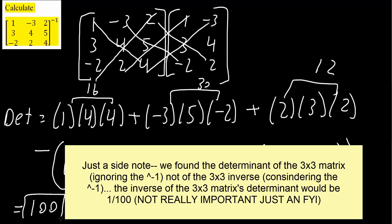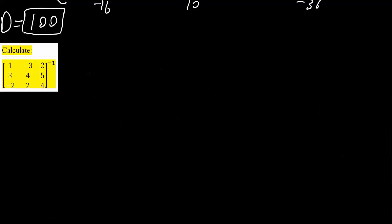Adding 16 plus 30 plus 12 minus parentheses negative 16 plus 10 minus 36, we get 100. So the determinant is 100, but we're not done — we just got one part to solve this problem. For the next step, which involves even more work, I'll draw a relatively big box because we need some space.